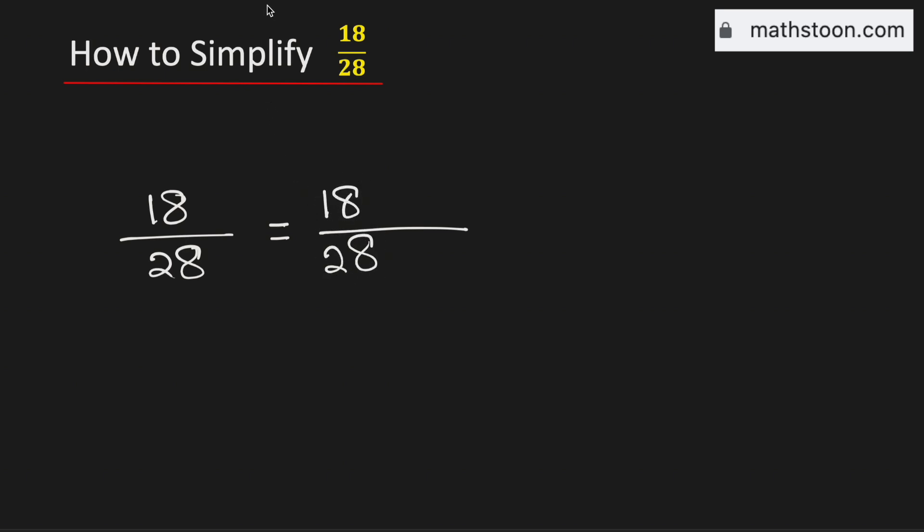We know that both numbers are divisible by 2. Therefore, to simplify this fraction, we will divide both numbers by 2. As a result, we get 9 over 14.